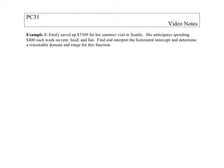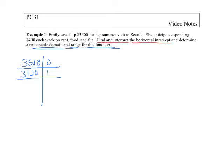Alright, so let's take a look at example one. It says Emily is saving up, or she has saved up $3,500 for her visit to Seattle. She anticipates spending $400 a week on rent, food, and fun. Find and interpret the horizontal intercept and determine a reasonable domain and range for this function. So, if we kind of laid out a table, what we have here is she starts out with $3,500 at time zero, and then each week she's spending $400. So after week one, she's down to $3,100. After week two, she's down to $2,700. And we see that each week we are losing $400.